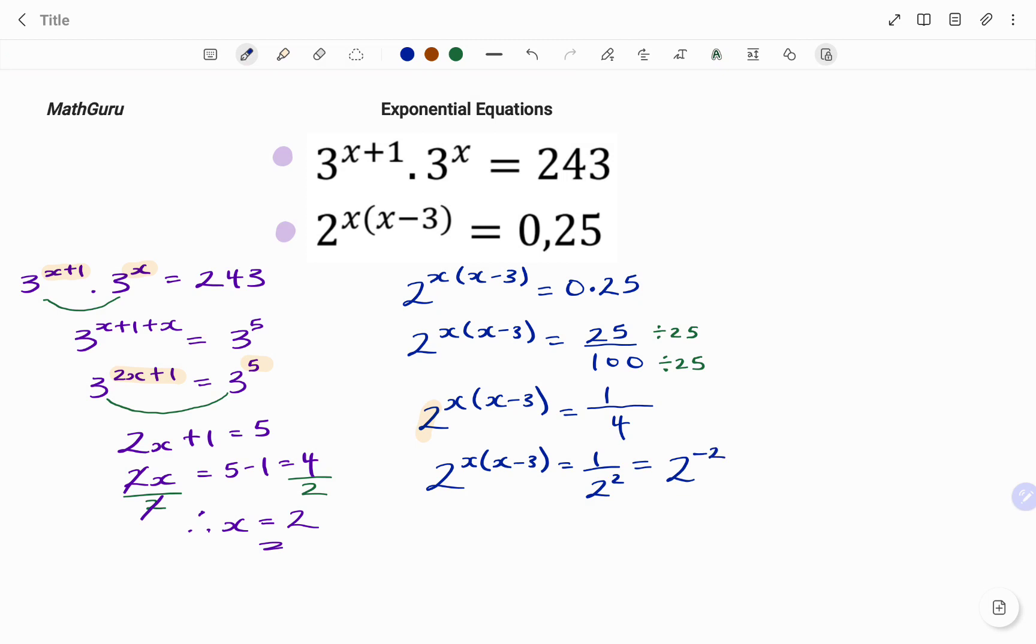I'm going to rewrite that. I have 2 to the power of x, x minus 3, equals 2 to the power of negative 2. Note that, I've been able to rewrite the equations such that I have, on the two sides, I have my base of 2.